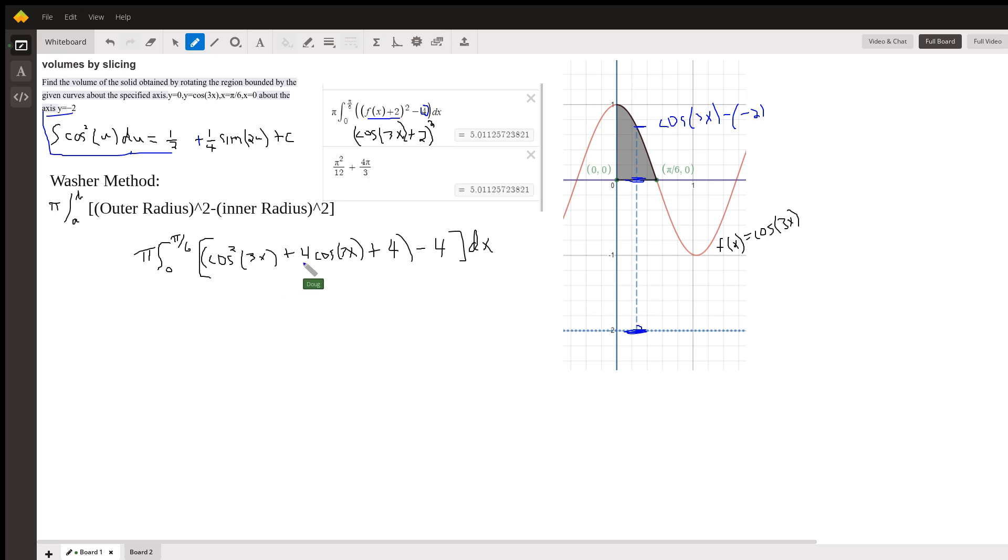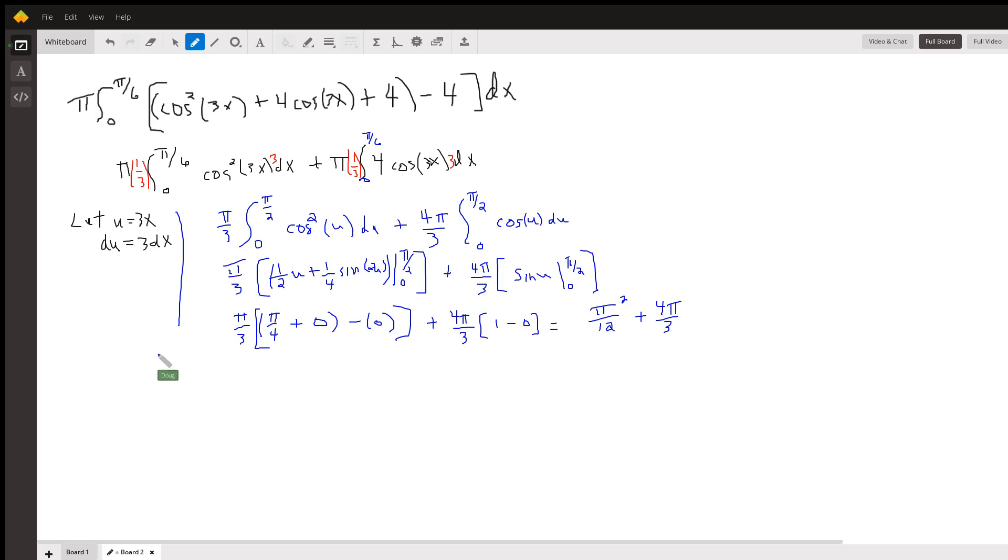First term squared plus twice the product of the two terms plus the second term squared. And then this minus 4, so we've got pi times a definite integral from 0 to pi over 6 of this thing right here. So we have to get an antiderivative of this and evaluate. So let's go to board 2.